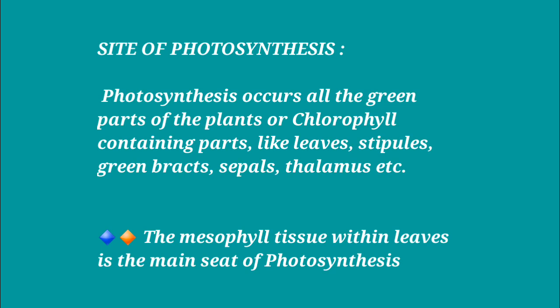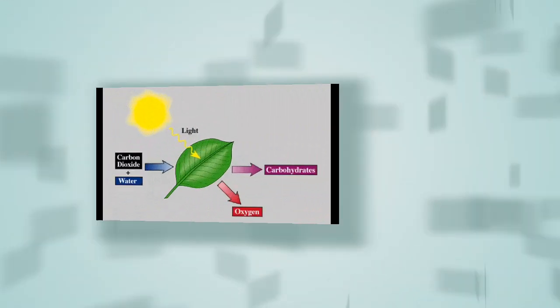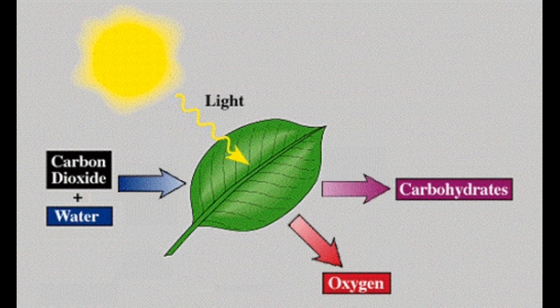The site of photosynthesis: photosynthesis occurs in all the green parts of the plant, or chlorophyll-containing parts, like leaves, stipules, green branches, sepals, thalamus, etc. The mesophyll tissue within the leaves is the main seat of photosynthesis. As shown in this photo, you can understand how photosynthesis occurs — taking sunlight, absorbing carbon dioxide from the atmosphere, and drawing up water through the roots.